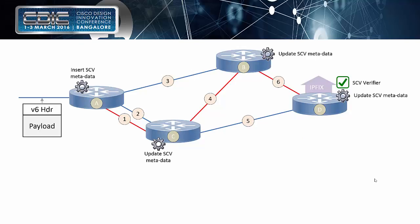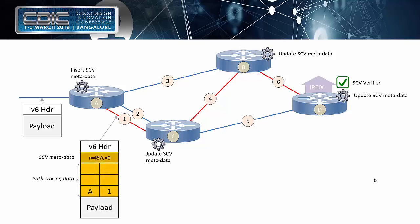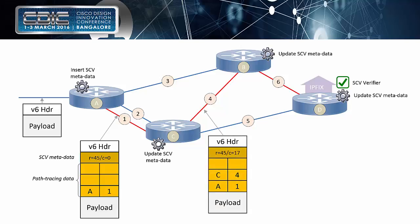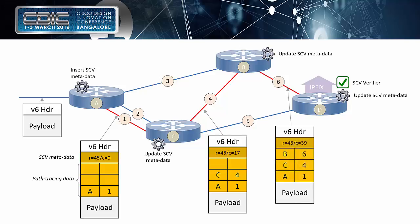Looking at an example: we get the tracing information at the first hop, where we impose an array big enough to cater for the entire domain, and we impose all the data fields we want to record — here it's service path verification and path tracing. At the first hop we record outgoing interface and node ID; second hop records node ID and outgoing interface C and four; final hop records B and six outgoing interface. The verifier then has all that information available, and we export it via IPFIX, flexible NetFlow, or directly into an information bus like Kafka.